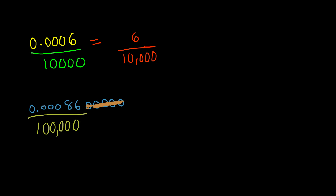Which gives us 100,000. Therefore, this is going to be our denominator. And our numerator is going to be 86. So 0.00086 is the same thing as 86 over 100,000.